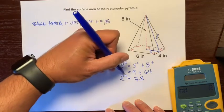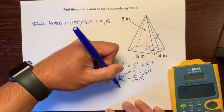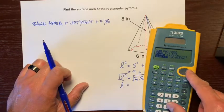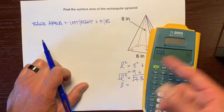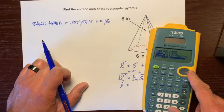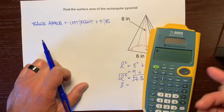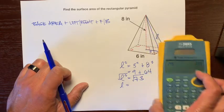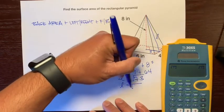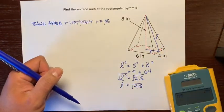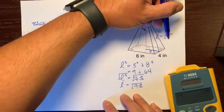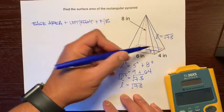3 squared is 9, plus 8 squared is 64, equals 73. The opposite of squaring something is square rooting, so we want to get that slant height by itself: L equals the square root of 73. Using math print mode on the calculator, let's see if there's a simplified form of 73. There aren't any pairs, so it's just the square root of 73. Now we have our slant height for the left and right triangles, which is √73.